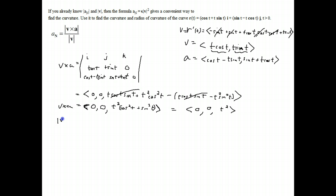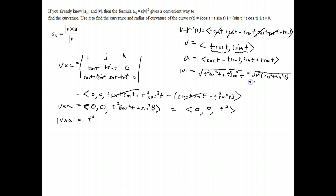The magnitude of v cross a is just t squared. The magnitude of v is the square root of t squared cosine squared plus t squared sine squared, which is the square root of t squared because cosine squared plus sine squared equals one. So we just get t. Therefore, the normal component of acceleration is t squared over t, which gives us t.